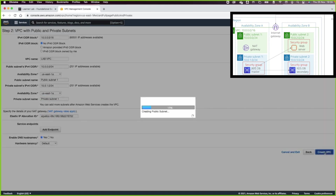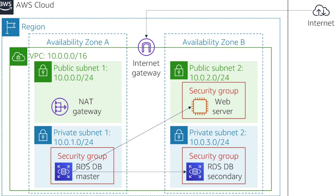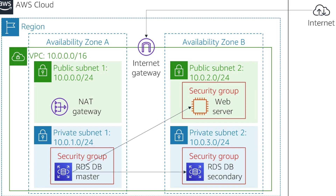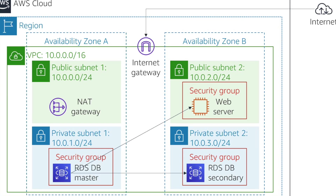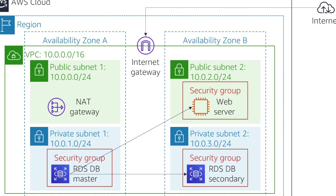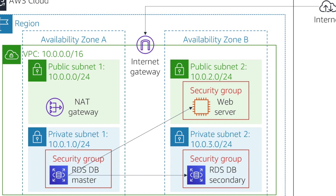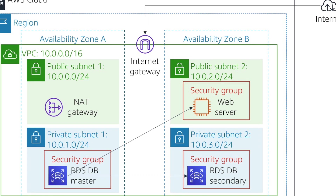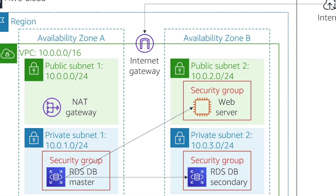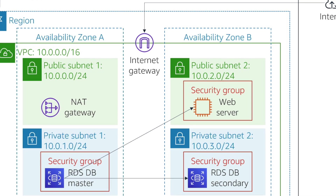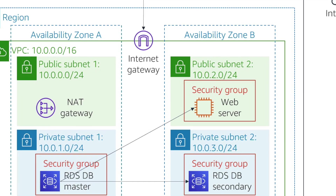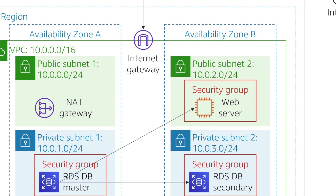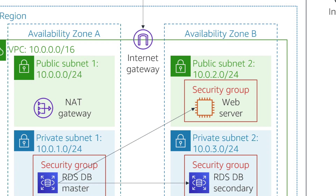This will take a while, so let us go back to inspect the architecture. The next thing is going to be to launch a web server, but before we do that we need to create a security group for the web server to open port 80. Then we are going to create another security group for the RDS to enable the MySQL port, and then we will test the connection between the web server and the RDS.